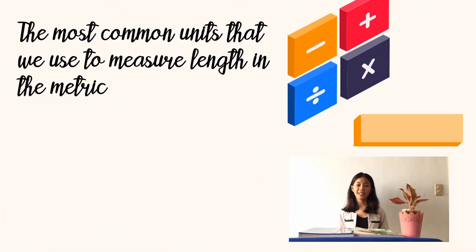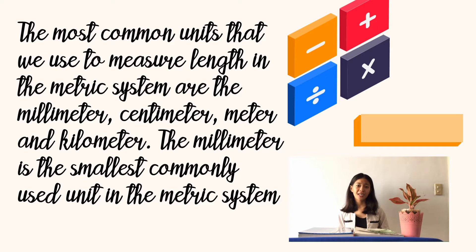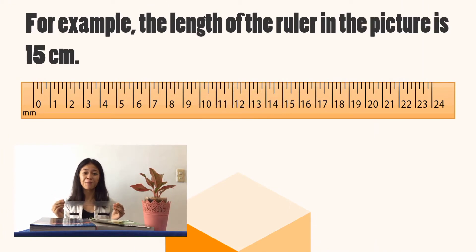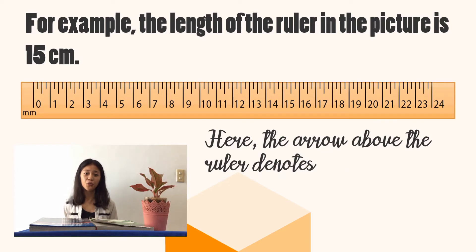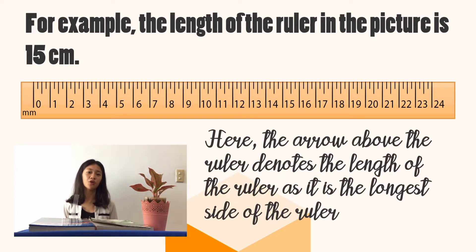The most common units that we use to measure length in the metric system are the millimeter, centimeter, meter, and the kilometer. The millimeter is the smallest commonly used unit in the metric system. For example, the length of the ruler in the picture is 15 centimeters. The arrow above the ruler denotes the length of the ruler as it is the longest side.